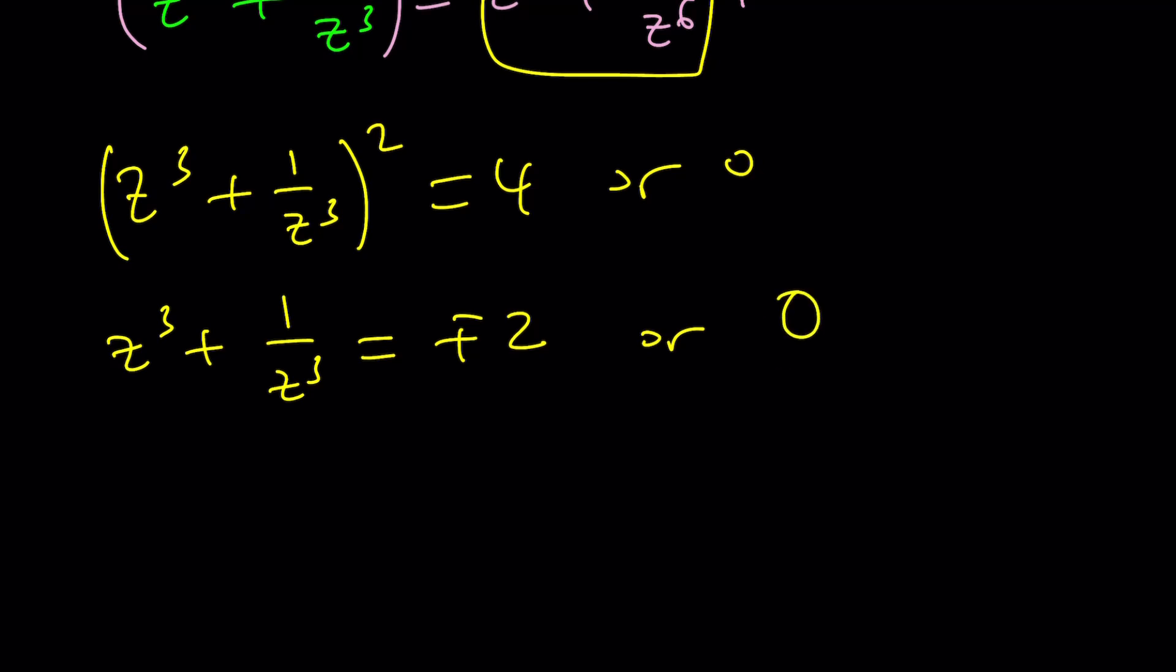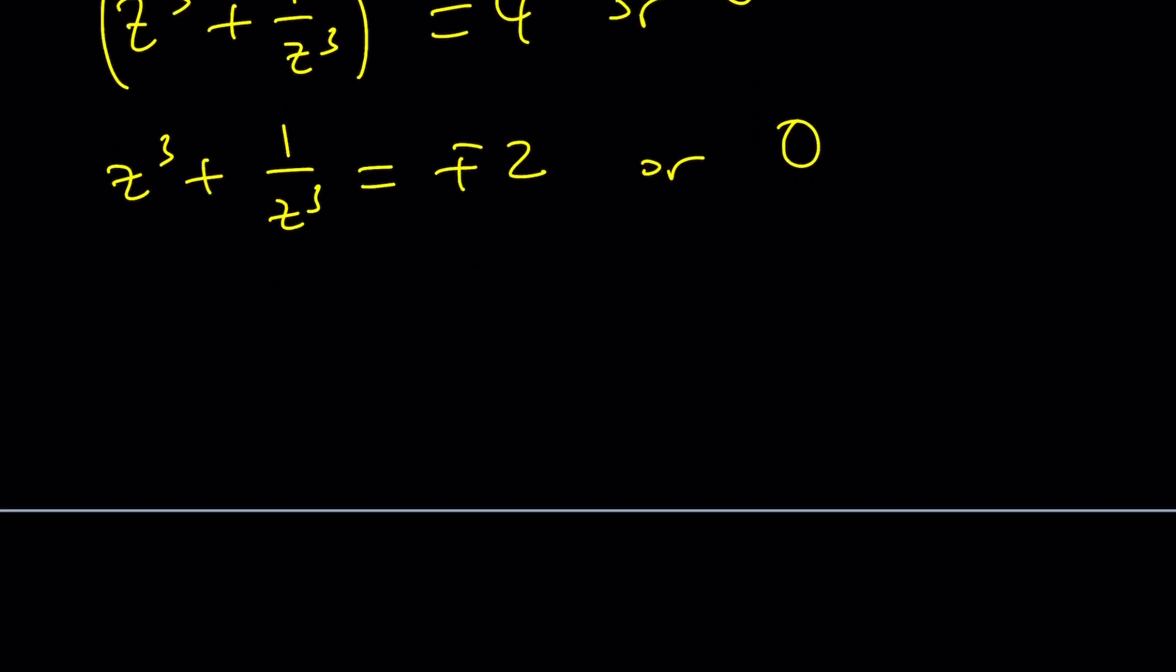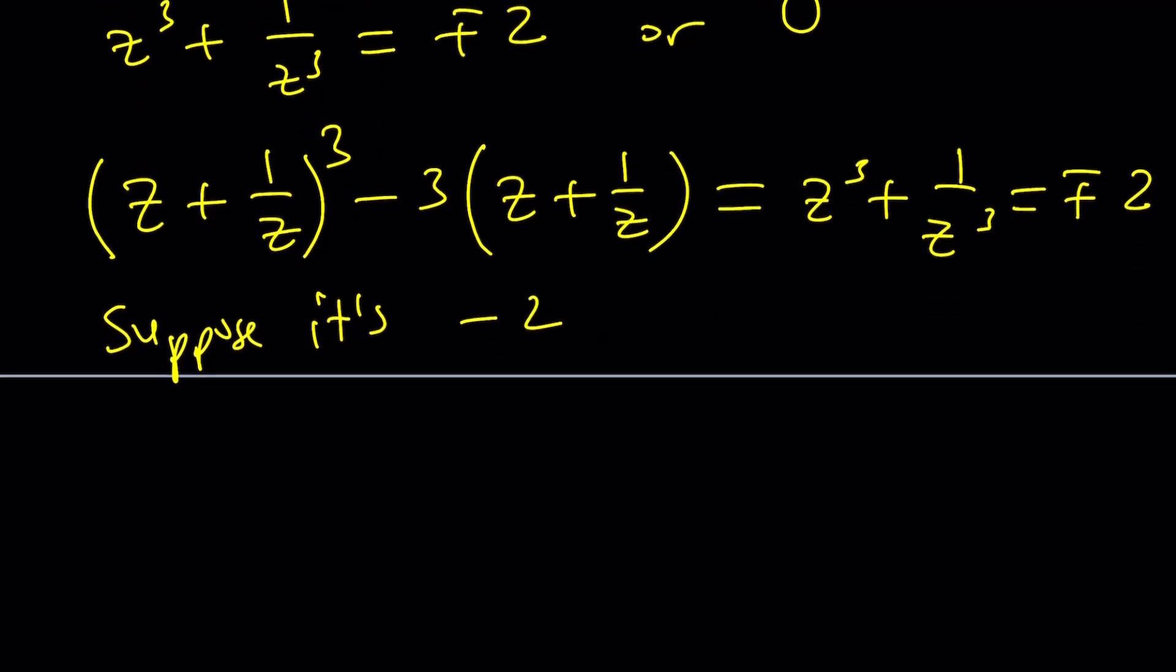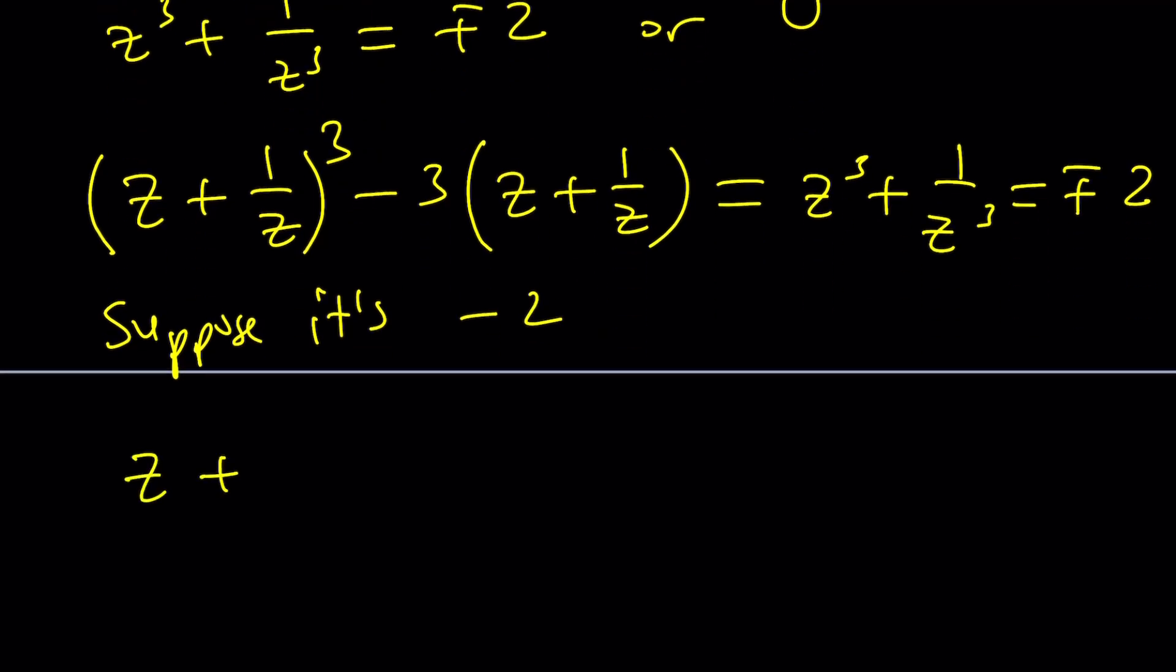Now let's consider the following. Cube z plus 1 over z and subtract from it 3 times z plus 1 over z. And guess what you're going to get from here? z cubed plus 1 over z cubed. And this is equal to plus minus 2. Suppose it's negative 2. And similarly you can consider positive 2. But let's say this is equal to negative 2.